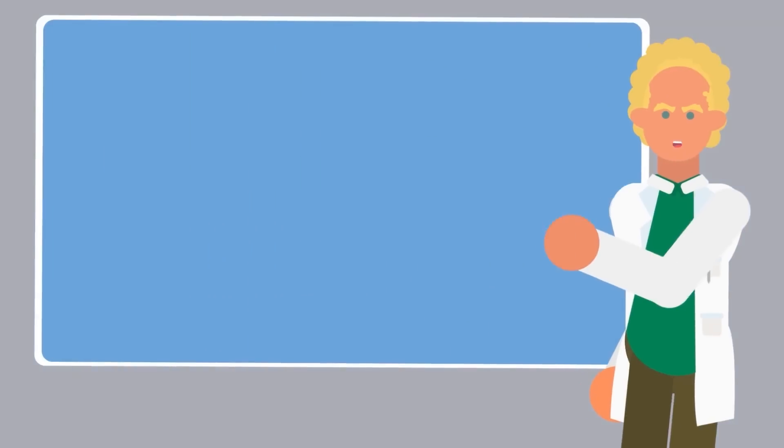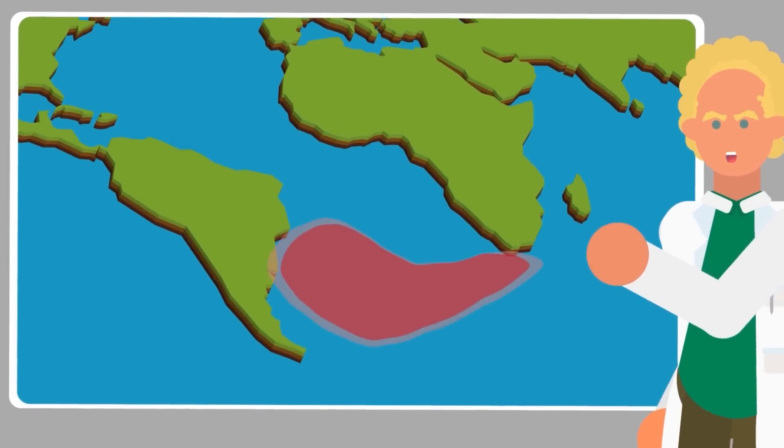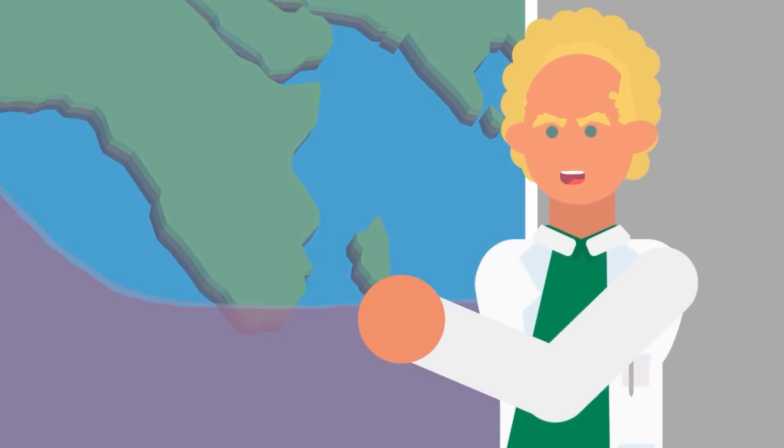Thankfully for now, the anomaly is over the Southern Atlantic, but as it moves and grows, it could eventually pass over heavy population centers.